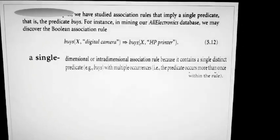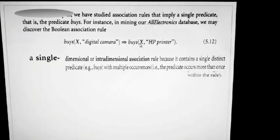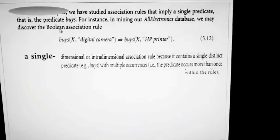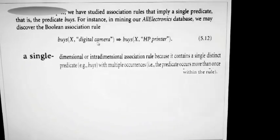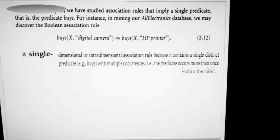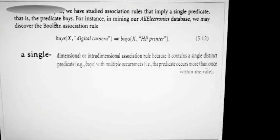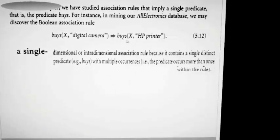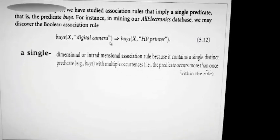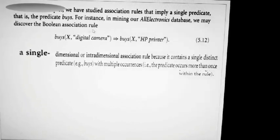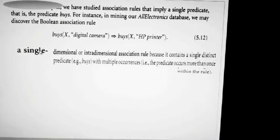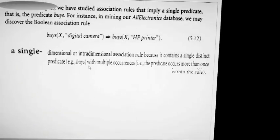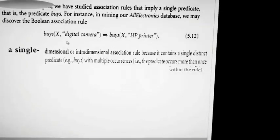Here we have a rule we've seen earlier when we calculated support and confidence. This is an association rule in boolean format, so I call it a boolean association rule. The predicate here is 'buys' — X buys a digital camera implies X also buys an HP printer. Because there is only one predicate, it is called single dimensional or intra-dimensional. It contains only a single predicate — 'buys' — occurring more than once.